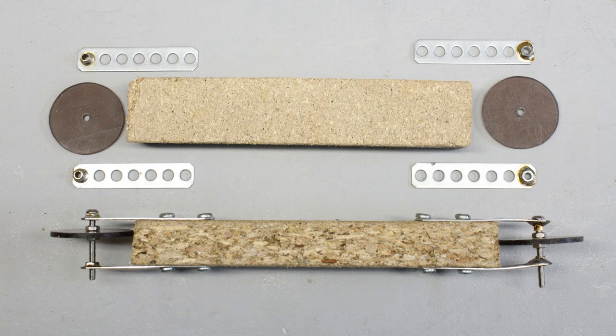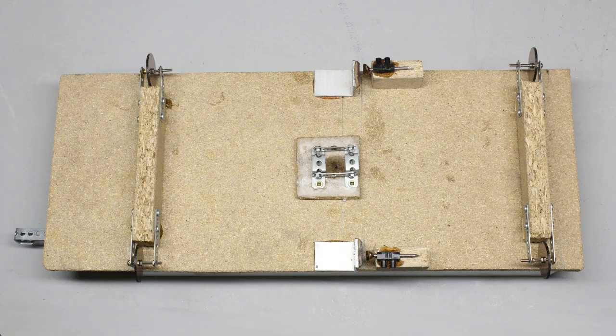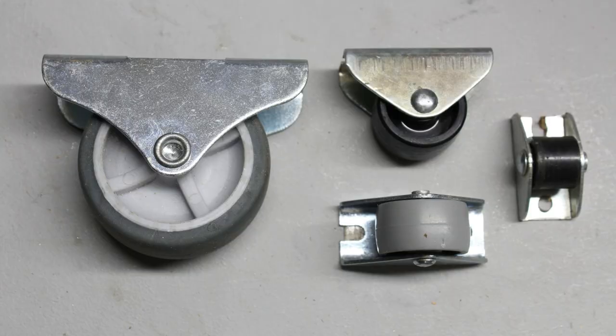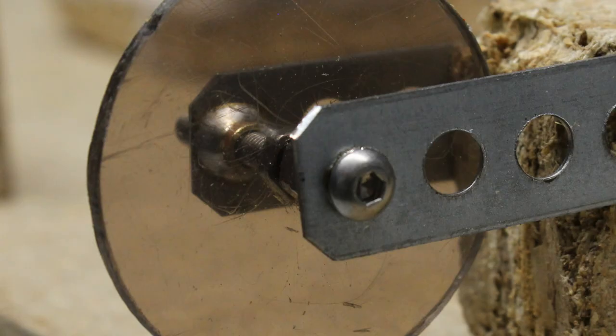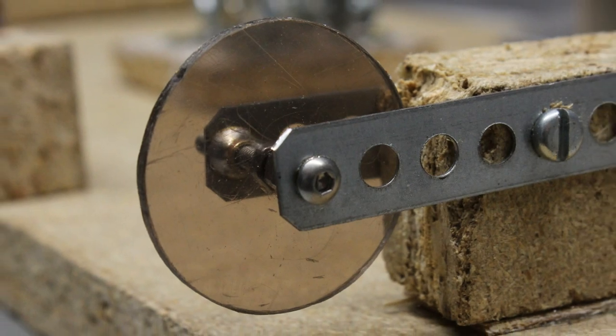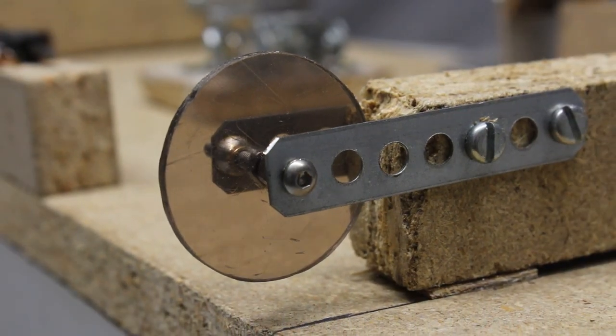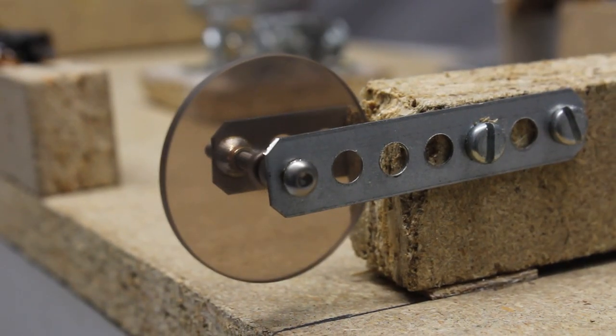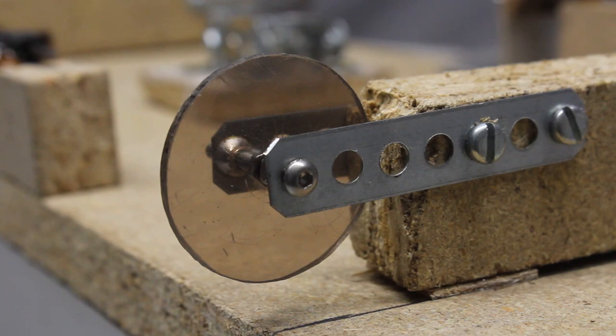Those discs will operate as wheels in order to reduce friction along the X and Y movement. Instead of the self-made plastic discs, you can use tiny wheels available in all hardware stores. Even the cheap wheels or ball bearings are usually of better quality than the discs I have cut, but I like the idea of using a CNC to improve its own design, its machine evolution.